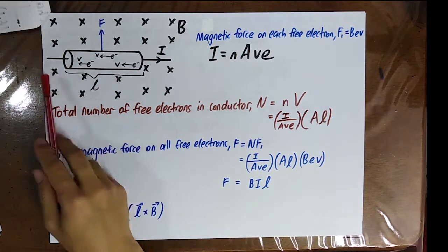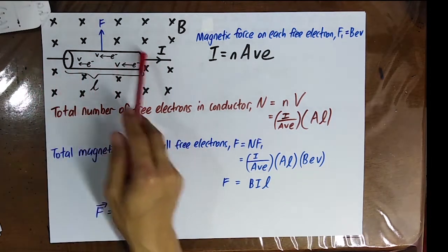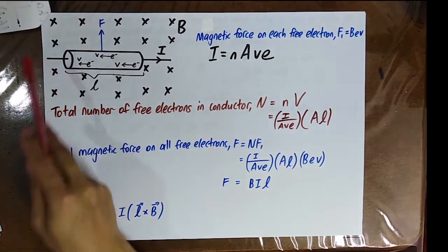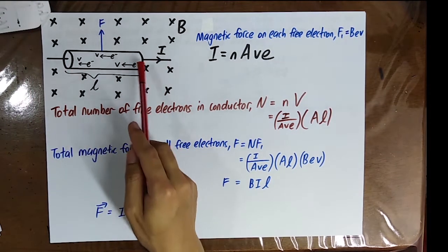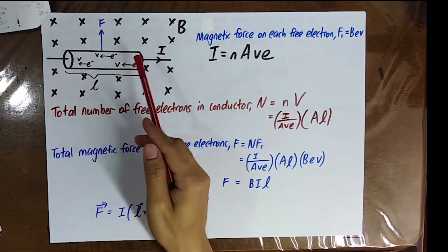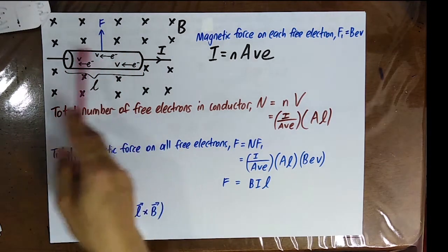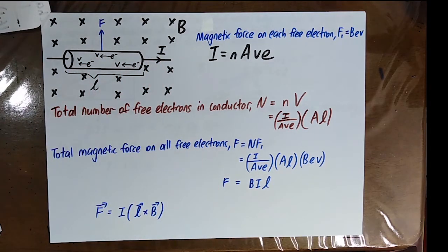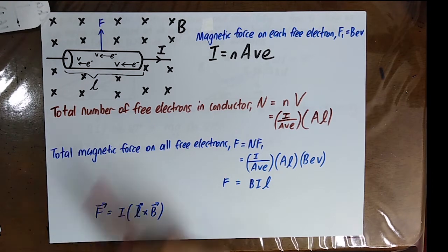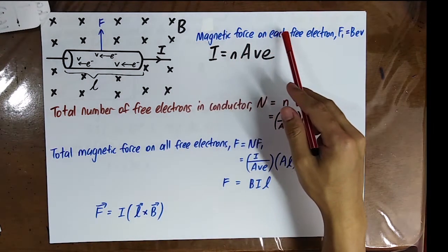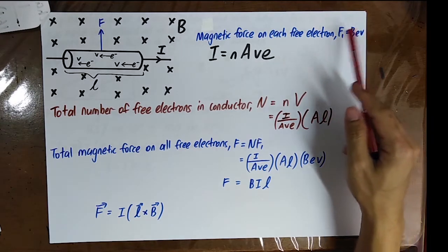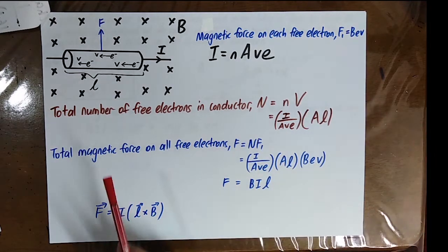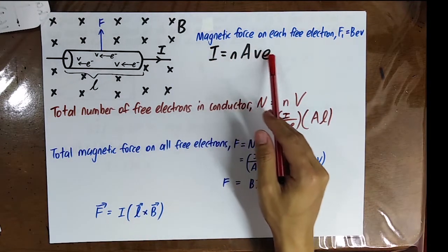This is a conductor placed inside a uniform magnetic field B. The current flows in one direction, so the free electrons move in the opposite direction. The magnetic force on each free electron is BQV, where Q is the charge of the free electron, equal to e. From the last chapter on direct current, we know that I = nAve.